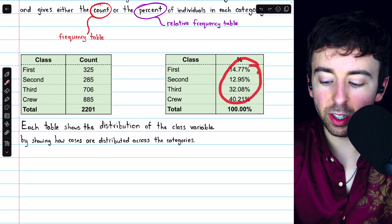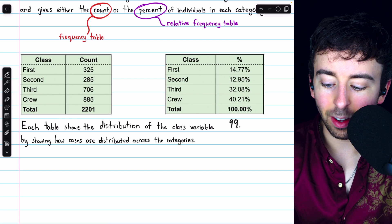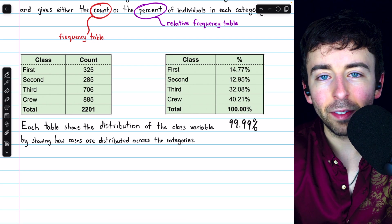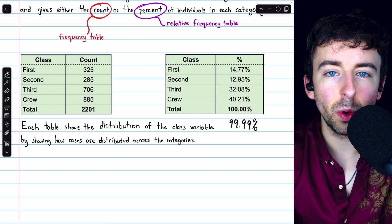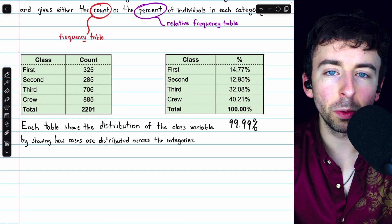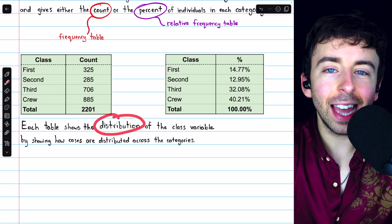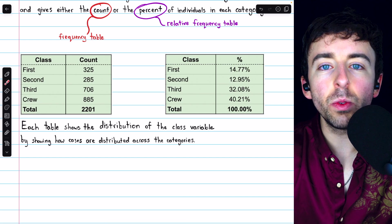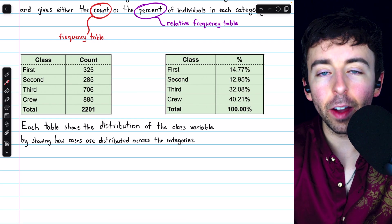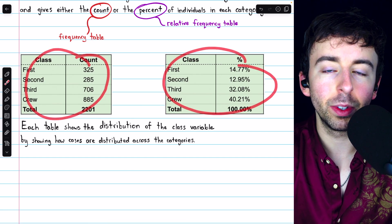Just as the total counts in the frequency table should add to the total number of individuals in our data, in this case 2,201, in a relative frequency table, all of those relative frequencies should add to 100%. Although sometimes, if you do these calculations, it's going to add to something like 99.99%, because when you calculate relative frequencies, you have to do division, and sometimes you have to round. So a little bit of round-off error could occasionally make your total not quite 100%, but that's no cause for concern. The distribution of a categorical variable is the way in which individuals in our data are distributed across the different categories. These are two ways to show that with a table: a frequency and a relative frequency table.